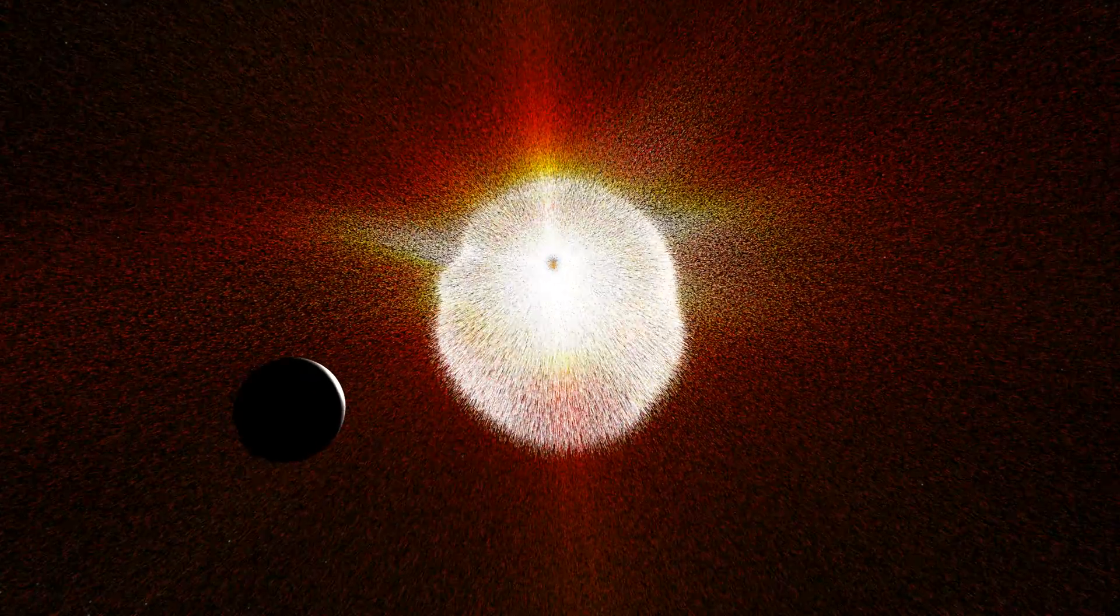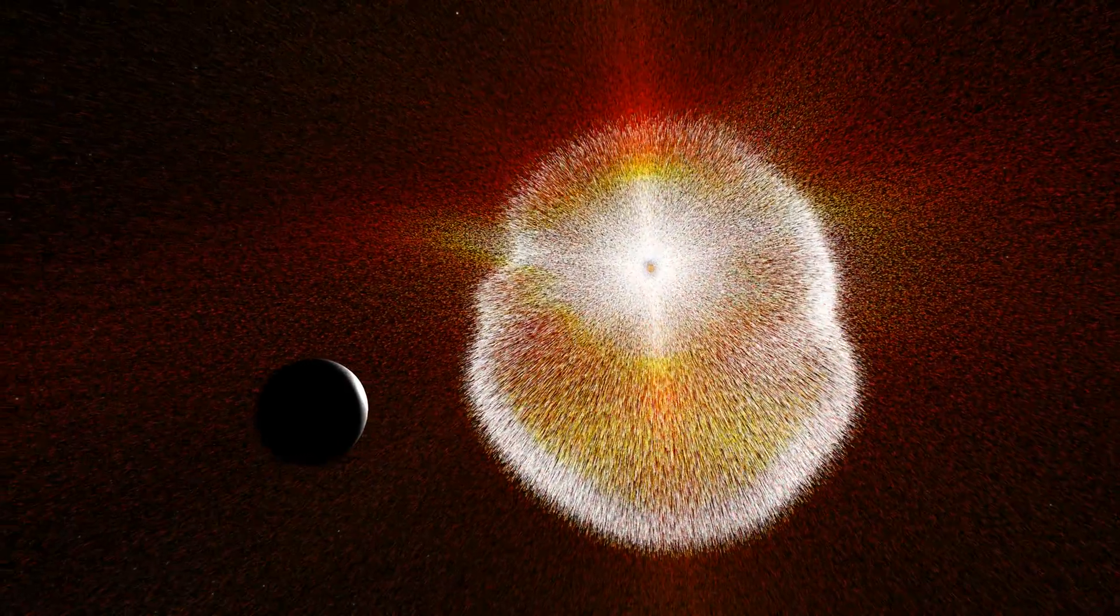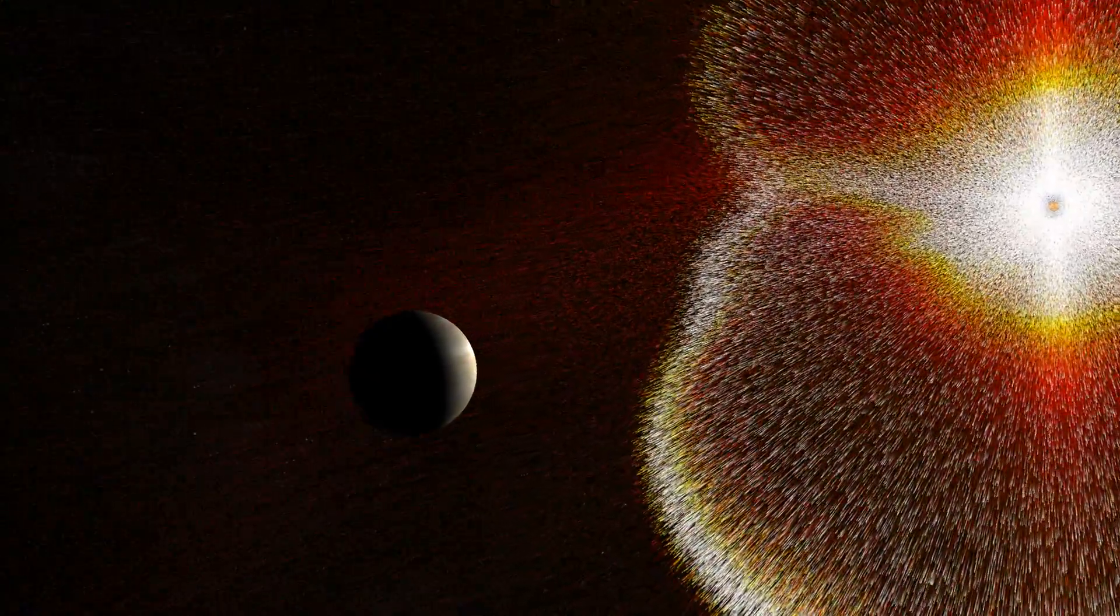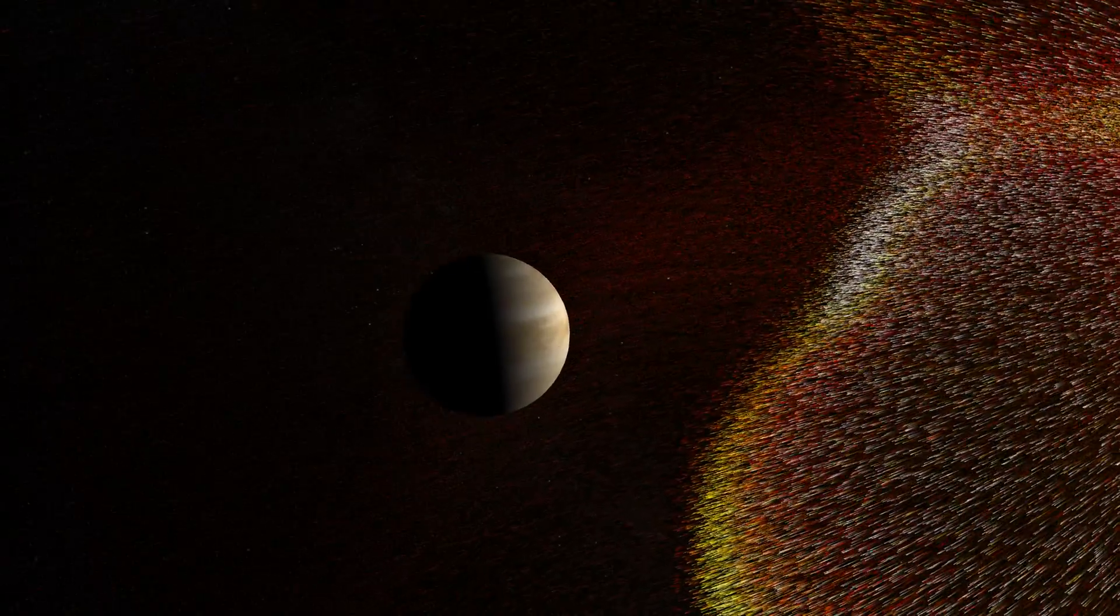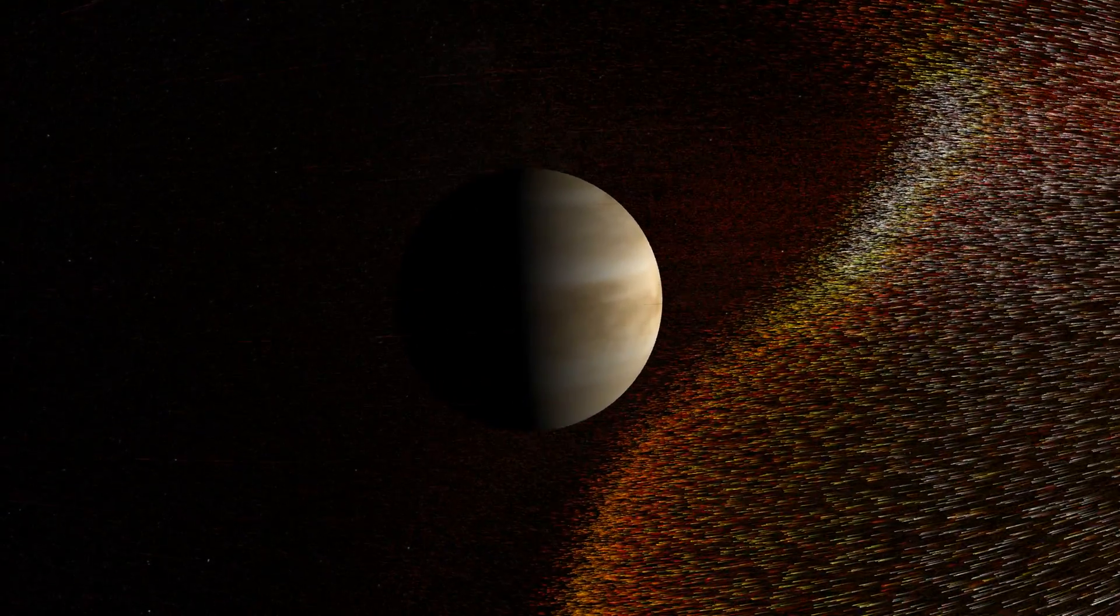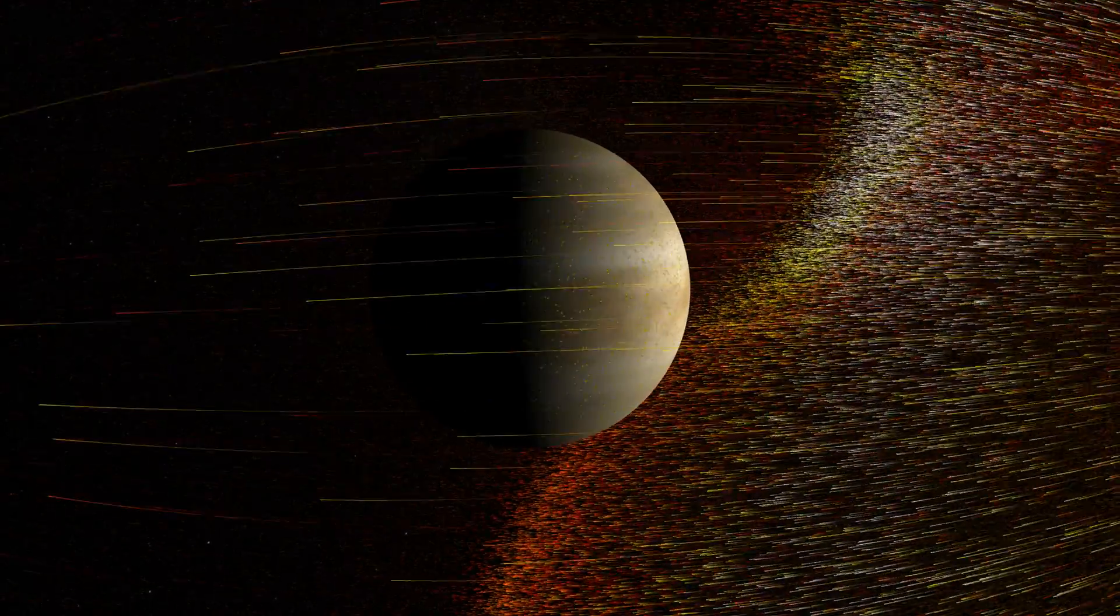Want a vision of Earth gone wrong? Just look at what solar storms do to our sister planet, Venus. They strip away lighter elements in its upper atmosphere: hydrogen, oxygen, and the molecule they form, water.